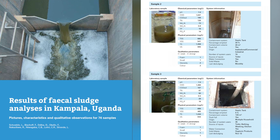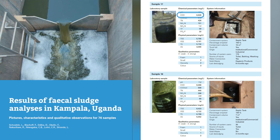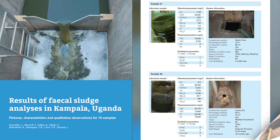Because there is still a general lack of information on fecal sludge characteristics, we compiled a report of 76 samples analyzed in Kampala, Uganda. The samples are presented in increasing concentrations of COD. For each sample, there is a picture of where the sample was taken and what it looked like in the laboratory, along with characterization information on solids, nutrients, and organics, as well as qualitative information like viscosity and the type and usage of onsite containment. As COD concentration goes from 1,000 mg/L to 9,000 mg/L to 26,000 mg/L, the visual appearance is also quite different. Qualitatively, you can already get a rough idea of characteristics based on appearance. This report can be downloaded for free on our website.